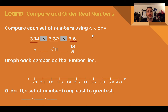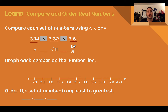Those are not the numbers that we originally used, so when we're doing this, we need to replace them back with our original numbers. So 3.14 was pi, 3.32 was the square root of 11, and 3.6 was 18 fifths. Our symbols should be the same: pi is less than the square root of 11, which is less than 18 fifths.